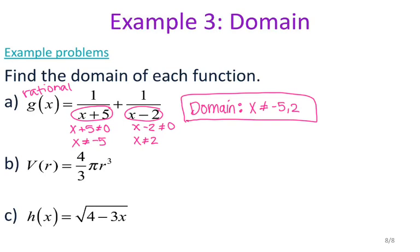For letter b, I have v of r equals four thirds pi r cubed. If I look at this, it is not a rational expression — my variable is not in the denominator — and it's also not a radical. That means for this particular function your domain can really be anything. I can plug in a fraction, a decimal, a positive number, or a negative number, so my domain for this is all real numbers.